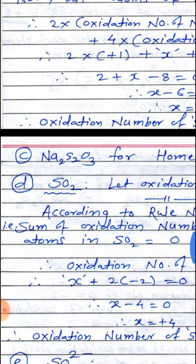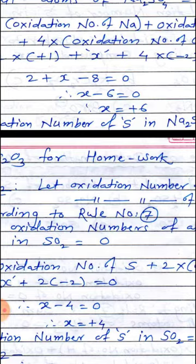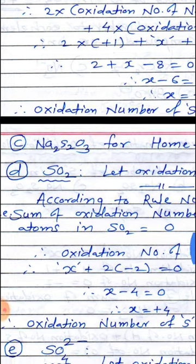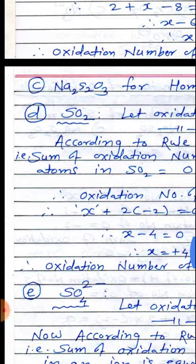Now C, that is Na₂SO₃ — this example is for your homework assignment. You have to determine the oxidation number of S in Na₂SO₃. If we have time at the end of this chapter, then one lecture will be dedicated to the solution of the homework given to you.